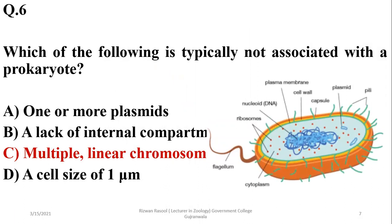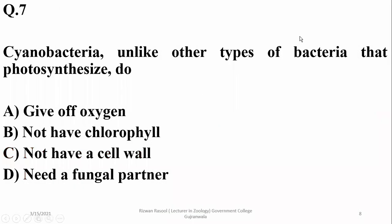Prokaryotes have a single highly coiled chromosome. Question seven: cyanobacteria, unlike other types of bacteria that photosynthesize, do release oxygen. Cyanobacteria are oxygen-releasing, they have chlorophyll and a cell wall, and may work in lichen association with a fungal partner, but they do not always need a fungal partner, so the right option is alpha.